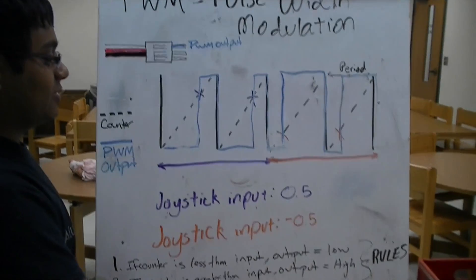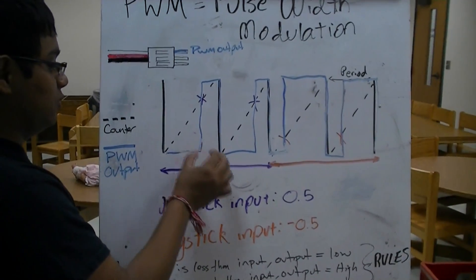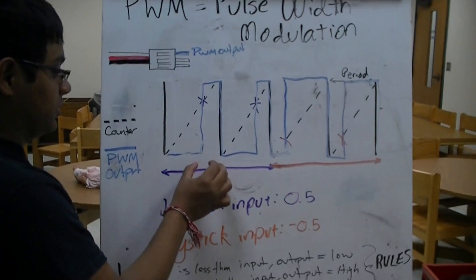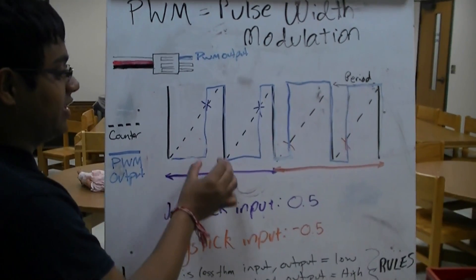This is how the C-Rio changes the width. This change in width tells the motor controllers to go to a specific speed and direction.